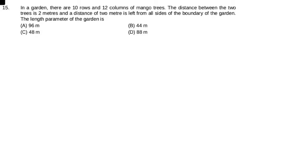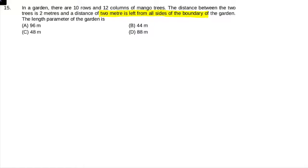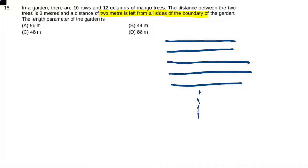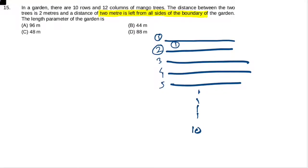The length parameter of the garden is... total rows are 10: one, two, three, four, five. An important observation: between the first and second row, the number of spaces is one. Between the second and third row, the number of spaces is also one.